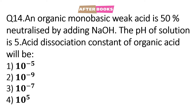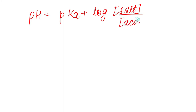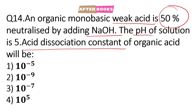Question number 14: An organic monobasic weak acid is 50% neutralized by adding sodium hydroxide. The pH of the solution is 5. The acid dissociation constant of the organic acid will be — we need to calculate Ka. pH is given. For a weak acid neutralized by this salt, pH = pKa + log(concentration of salt / concentration of acid).